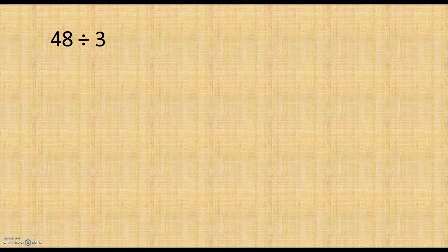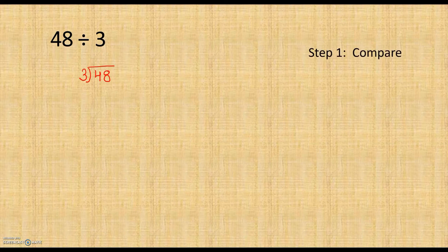Now let's move to the division method. Here the question is 48 divided by 3. First we will write it in long division form and solve it step by step. In step 1 we will compare — we compare the first digit of the dividend with the divisor. The first digit of the dividend is 4, which is greater than 3, so we can go to step number 2.